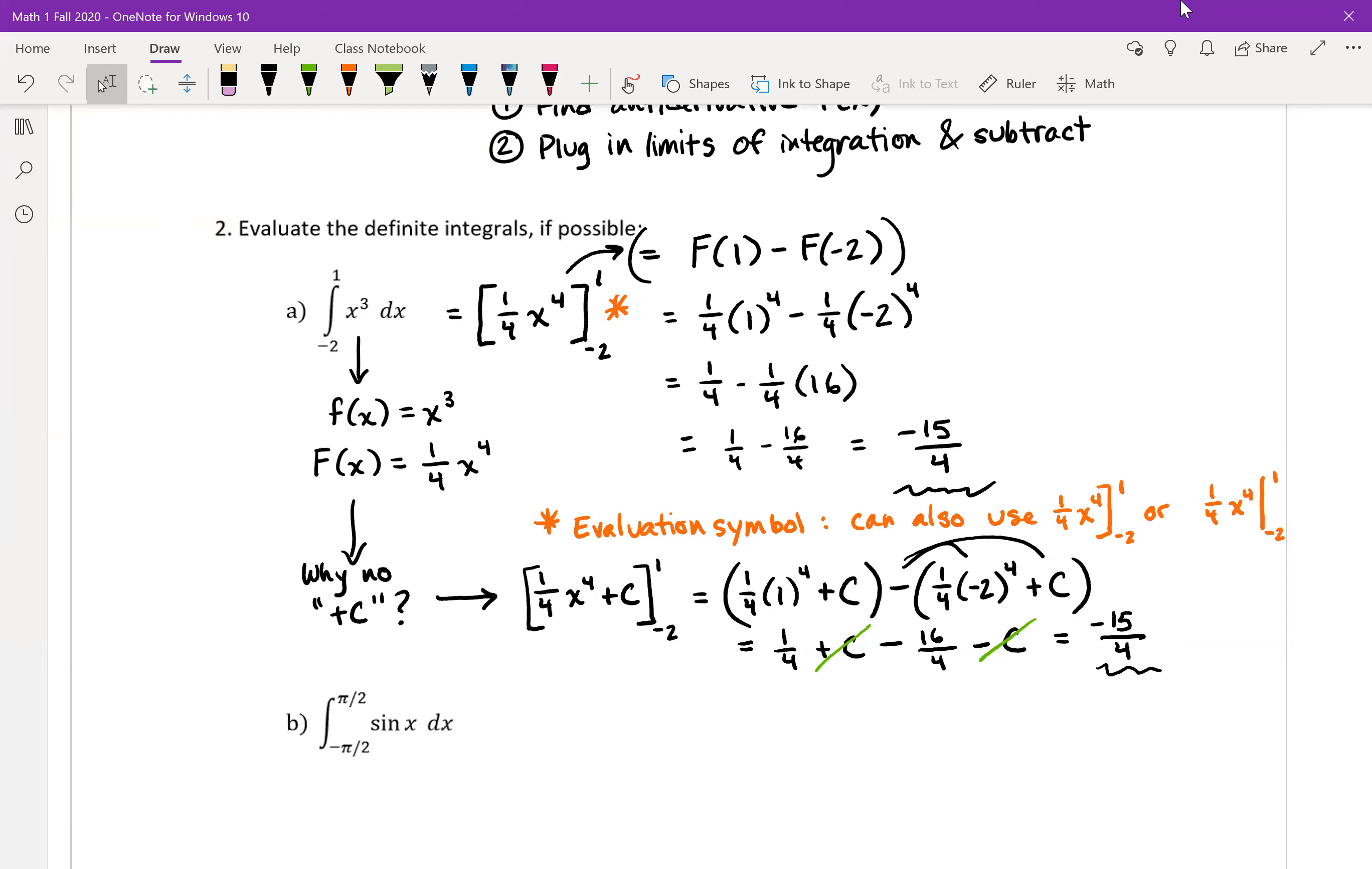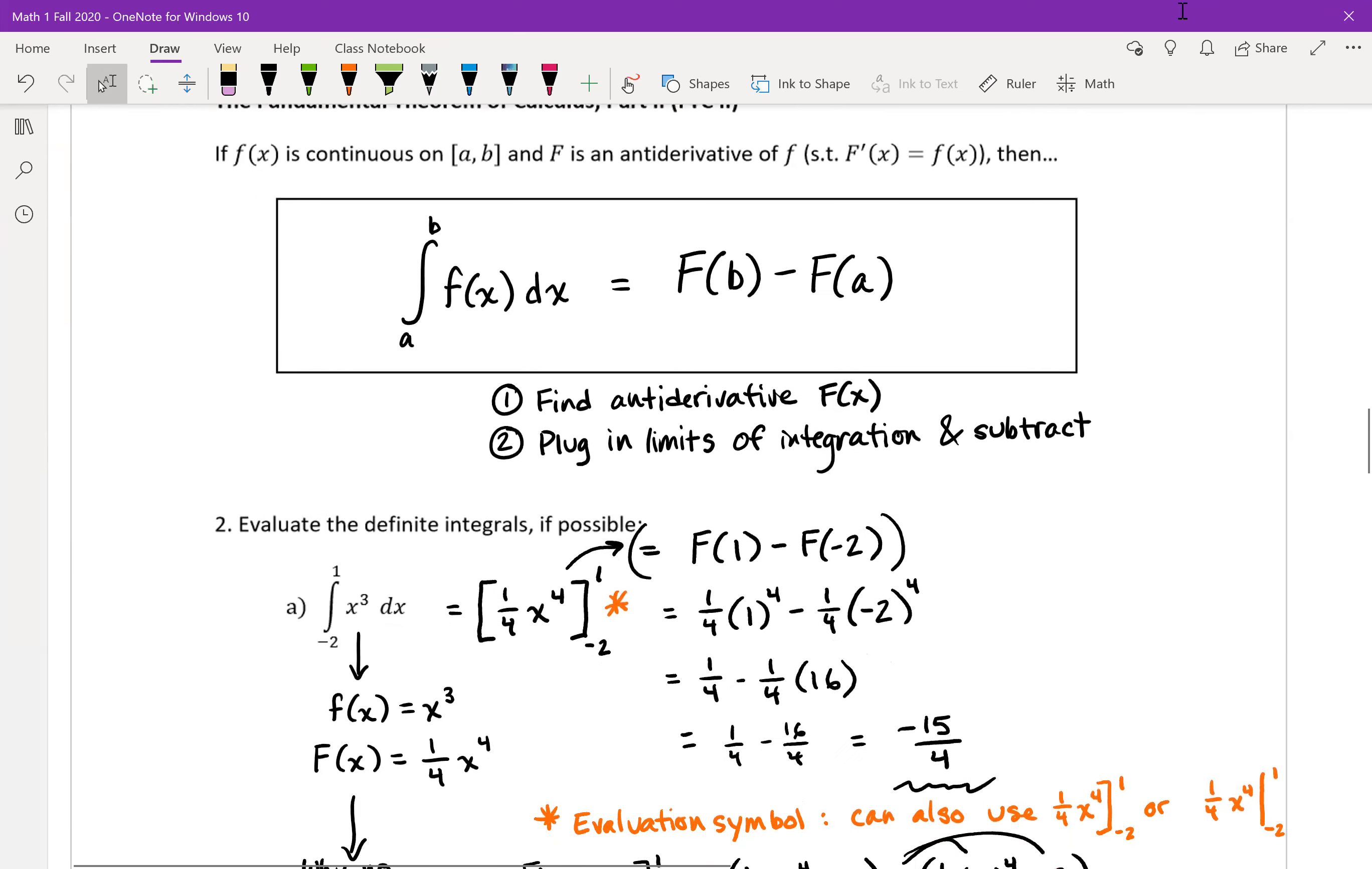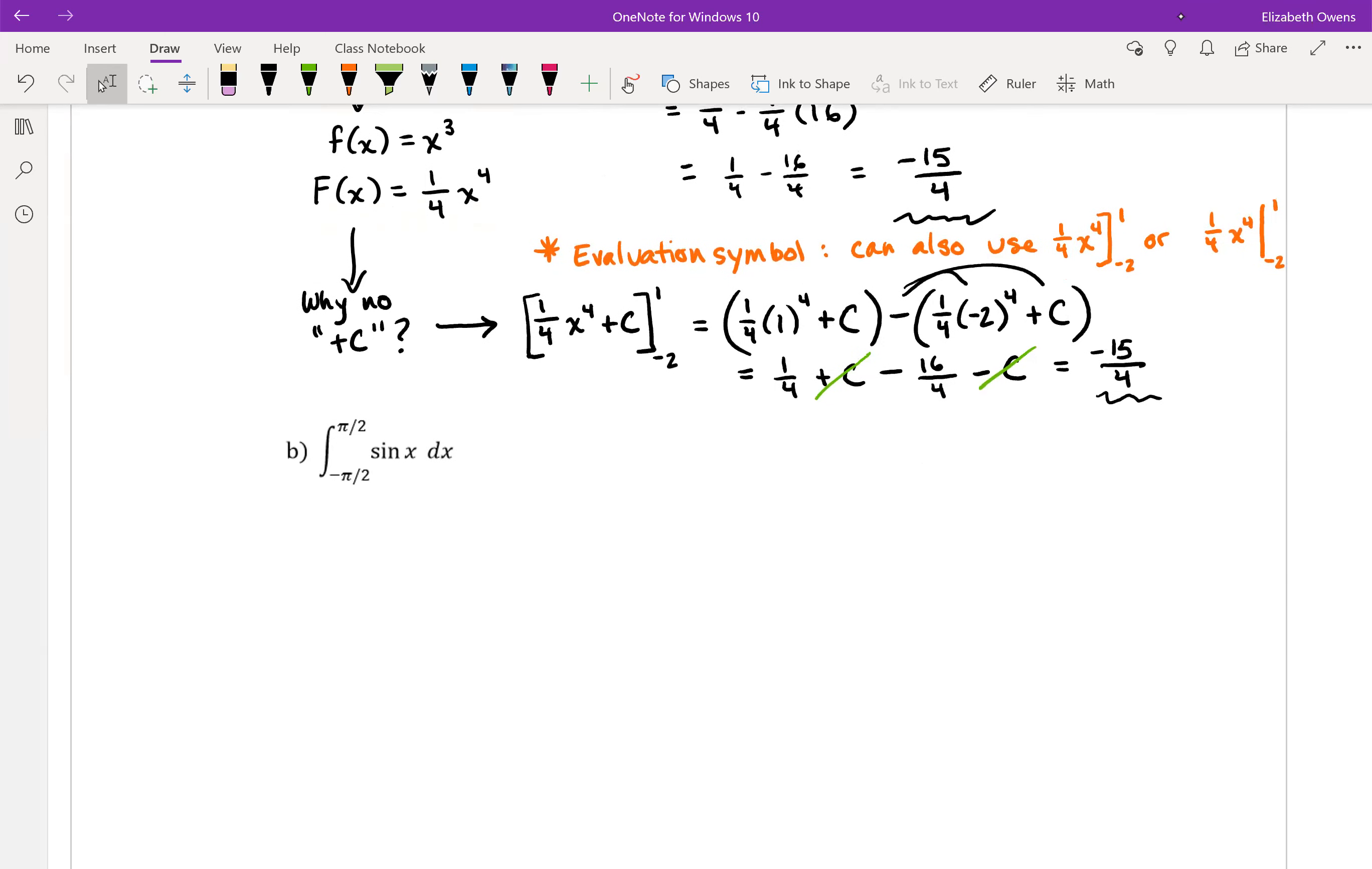For our next example of the Fundamental Theorem of Calculus part 2, remember this is our fast way of taking definite integrals, we are going to look at the integral from negative pi over 2 to positive pi over 2 of sine x dx.